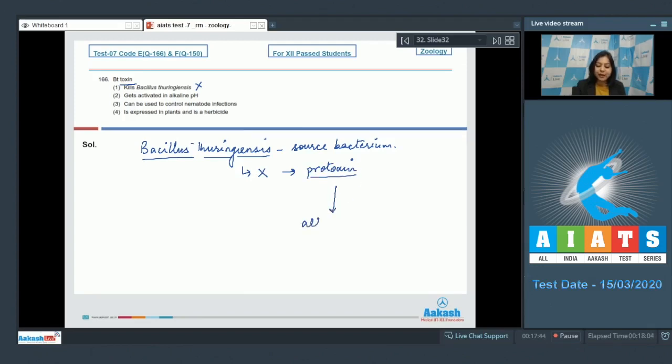This protoxin is activated due to alkaline pH in the midgut of insects, where it causes perforation of gut wall and thus causes killing of insect.